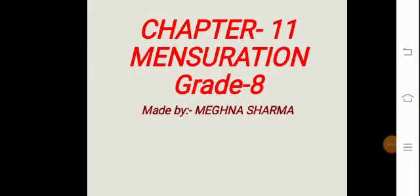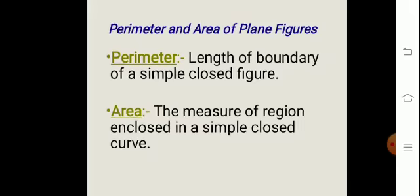Hello to all of you. Myself Meghna Sharma will be teaching maths of grade 8, chapter 11: mensuration. Mensuration means the measurement of earth. When we are finding the measurement of earth, we do so through perimeter and area. Today we will learn how to find the perimeter and area of plane figures. First is perimeter.